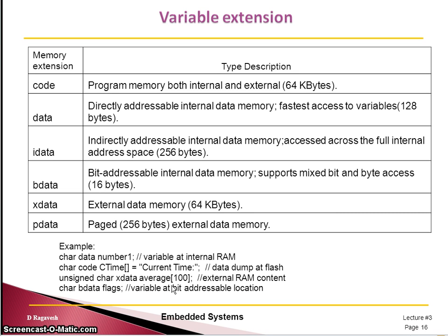There are two types of memory. If you just declare a variable name normally, it goes directly to RAM. If you want the data stored in flash memory, you use the keyword 'code' — for example, char code c_time. That string will be stored in internal flash memory. There are other memory extension types as well, and based on your requirement you choose the appropriate one.